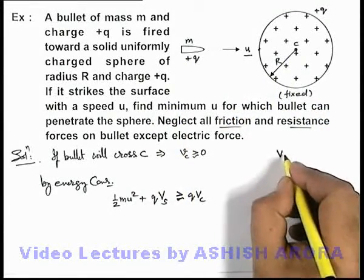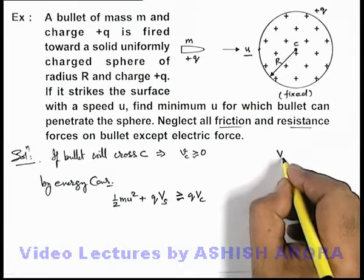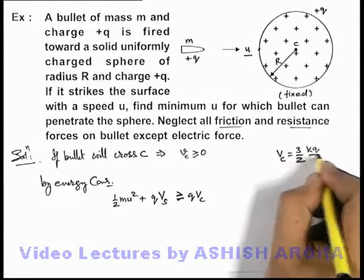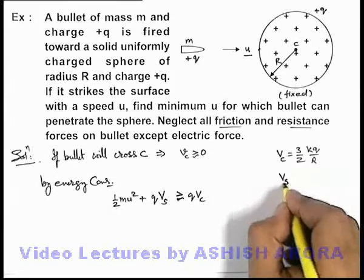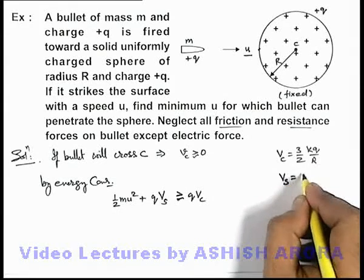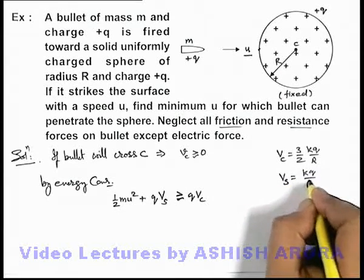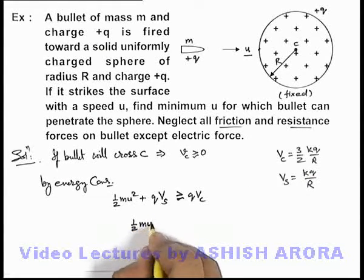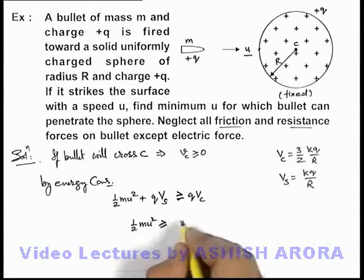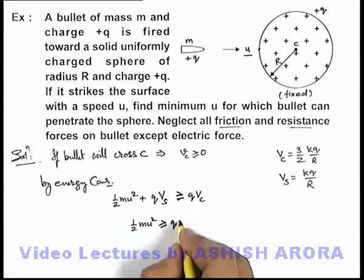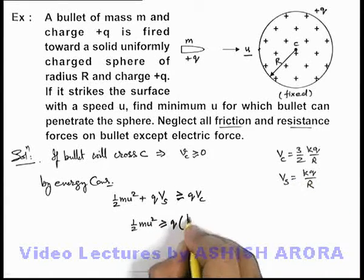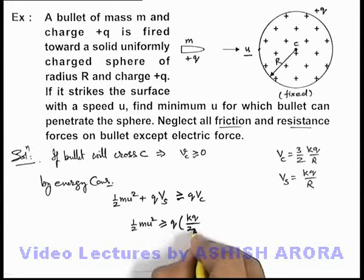The potential at the center is given by (3/2)(kq/R), and the potential at the surface of the sphere is kq/R. Substituting these values, (1/2)mu² must be greater than or equal to q(V_c − V_s). So V_c − V_s equals kq/2R.